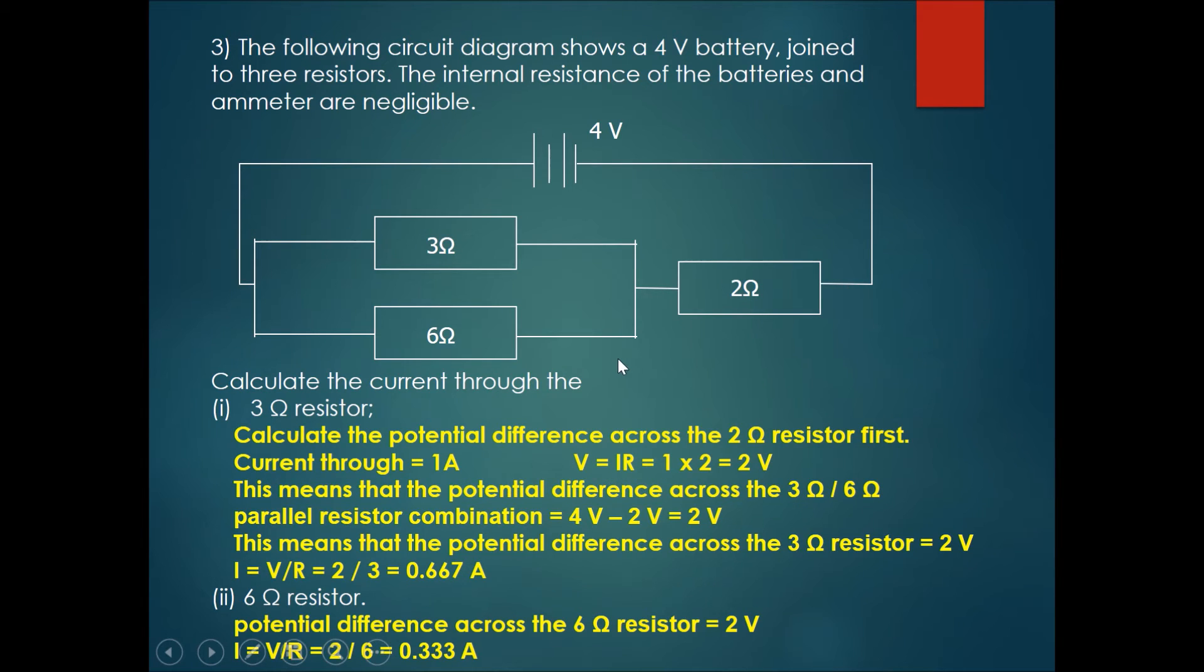Now we need to calculate the current through the 3 ohm resistor and the 6 ohm resistor. Doing so is slightly complicated but let's give it a try. Now we need to use the information that we have and put it on the graph in order to make our life simpler.